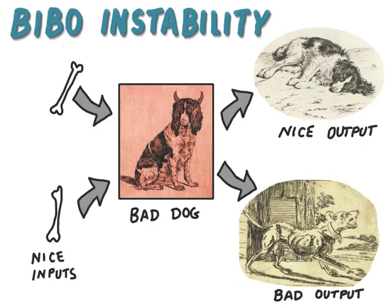On the other hand, if I give nice inputs to a bad dog, well sometimes I might get a nice output, but sometimes I'm going to get a bad output. That's the thing about bad dogs — they sometimes respond badly, even when you don't expect it.